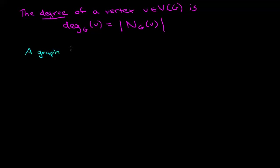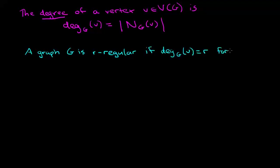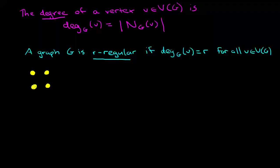A graph G is r-regular if the degree of every vertex v is equal to r, for all v in the vertex set. Let's take a look at some examples. Here I've drawn a four-cycle, and in general any cycle is going to have degree two everywhere, so cycles are two-regular.